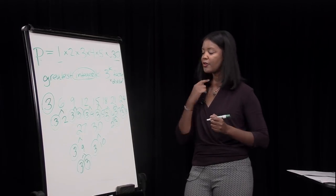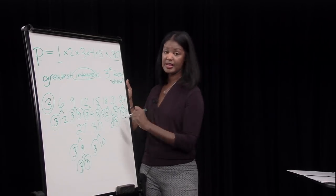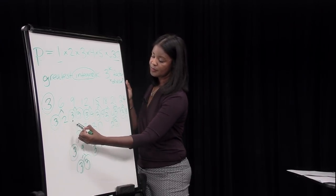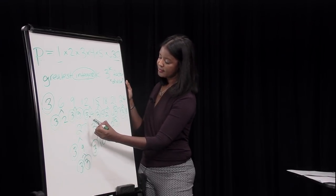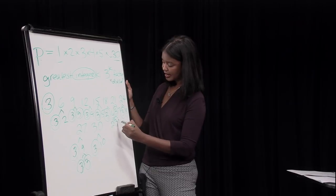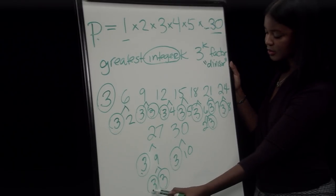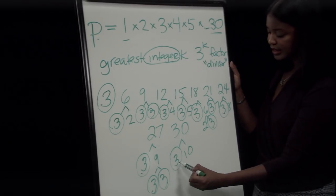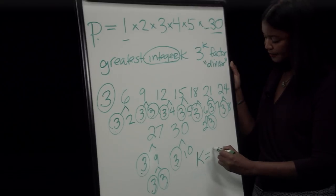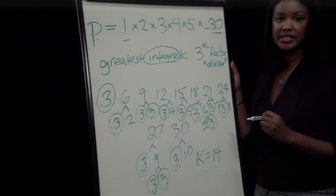Counting all the threes: from 3 (one), 6 (one), 9 (two), 12 (one), 15 (one), 18 (two), 21 (one), 24 (one), 27 (three), and 30 (one), we get a total count of 14. This tells us that k equals 14.